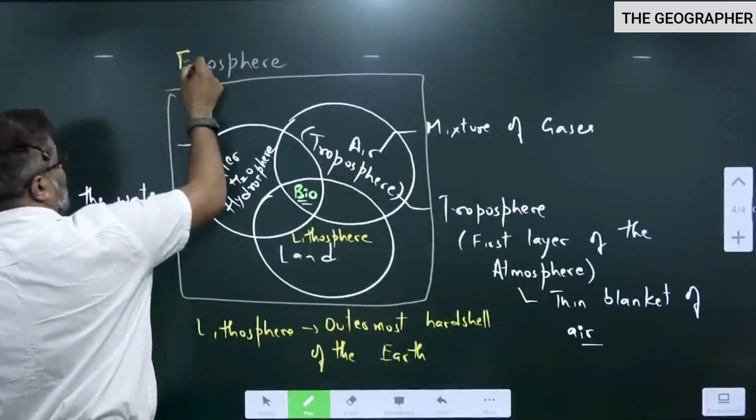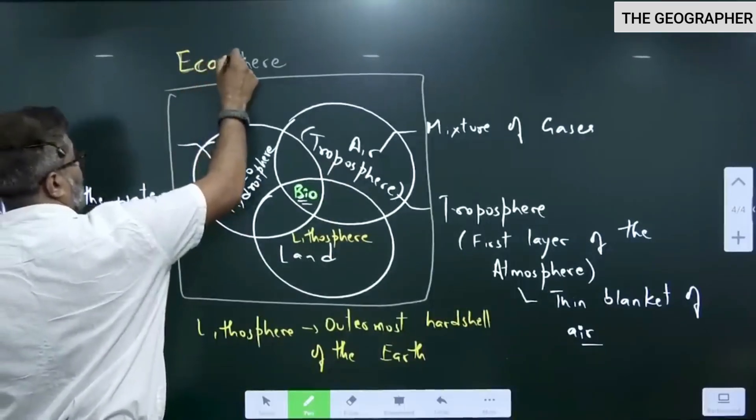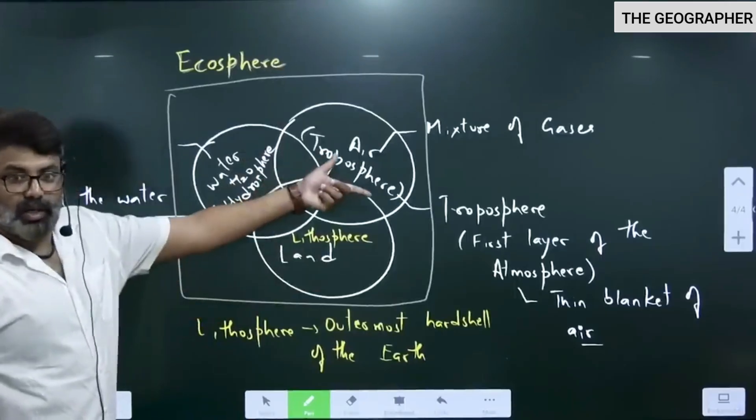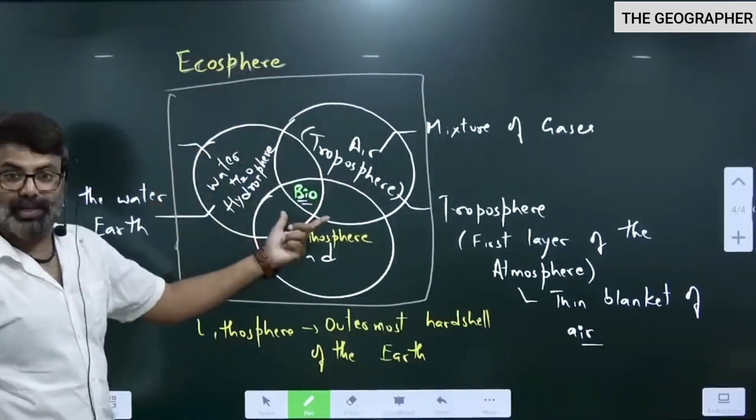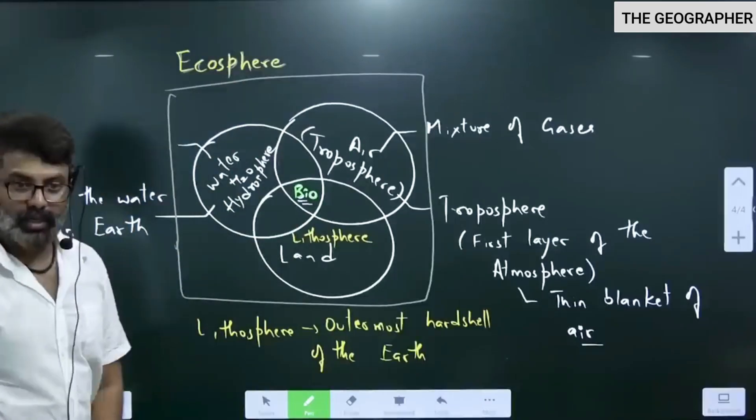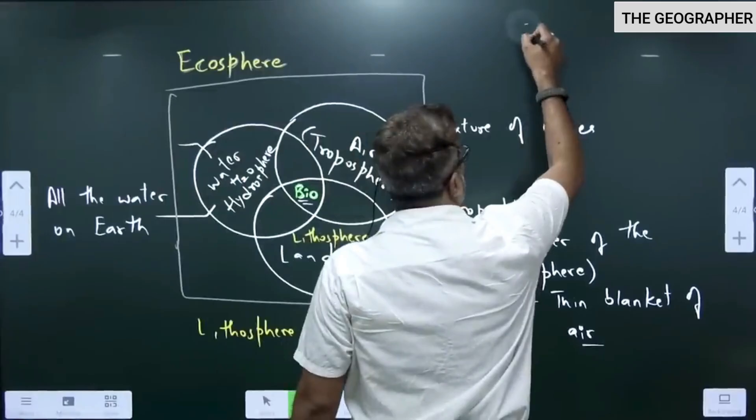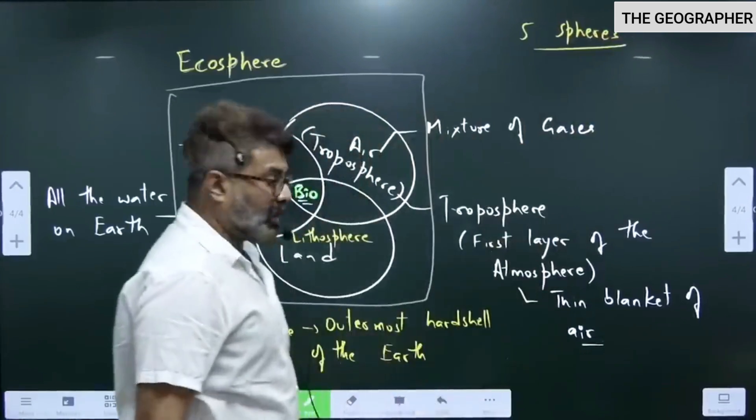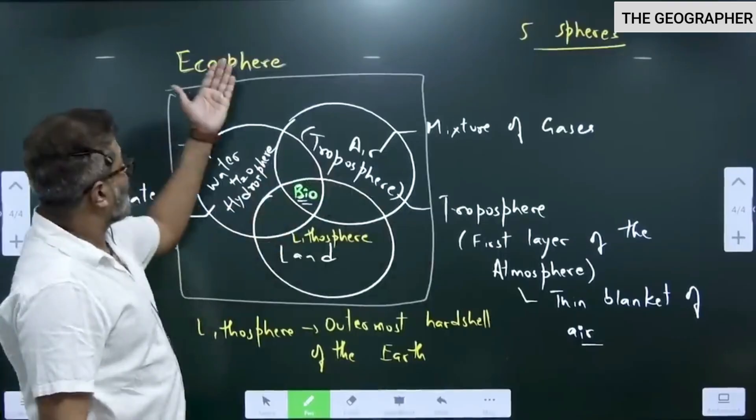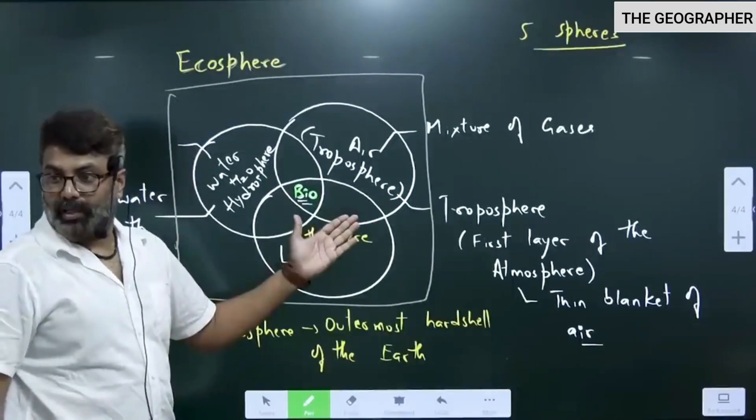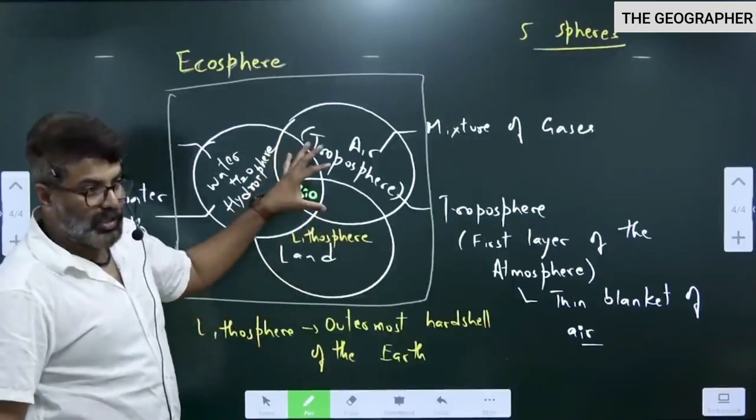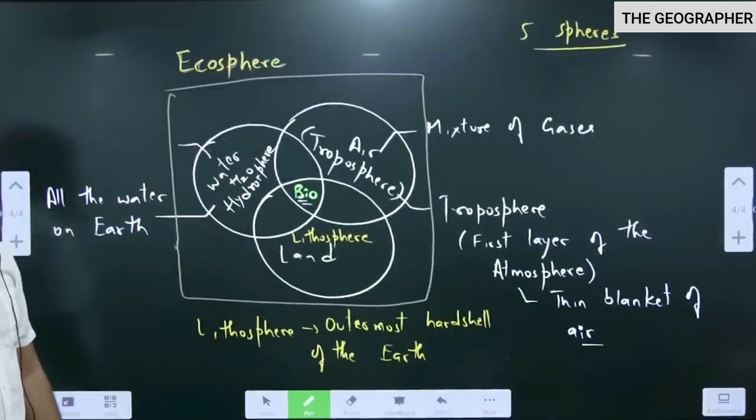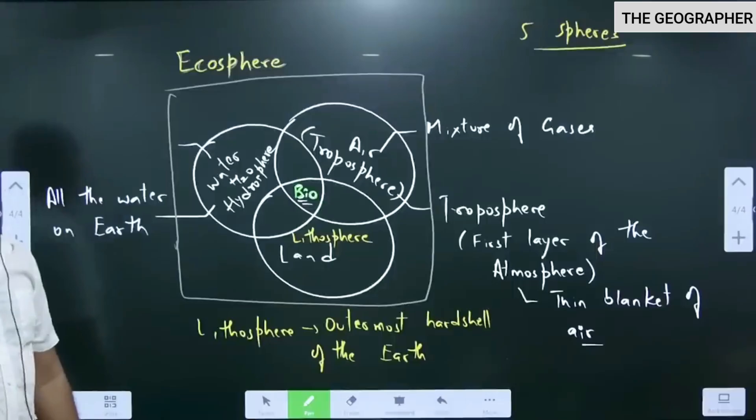In your NCERT if you read this Class 6 NCERT they have given this - 5 spheres: lithosphere, hydrosphere, troposphere, ecosphere, biosphere. Like this one by one I am mentioning the topic, so that you will come to know - this is physical geography. All this is physical geography.